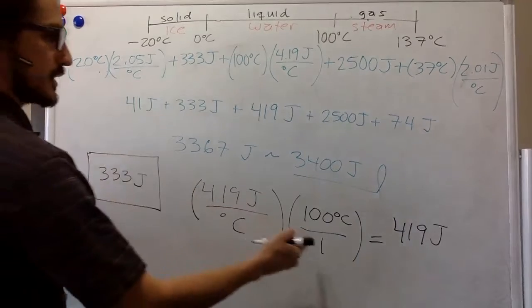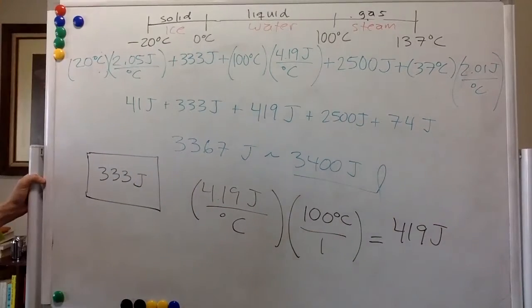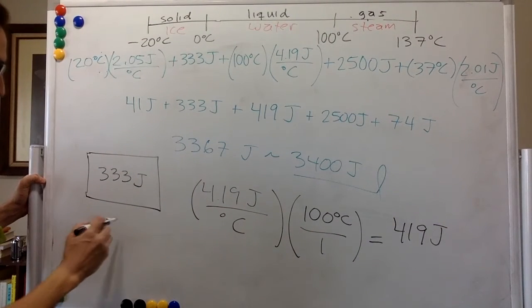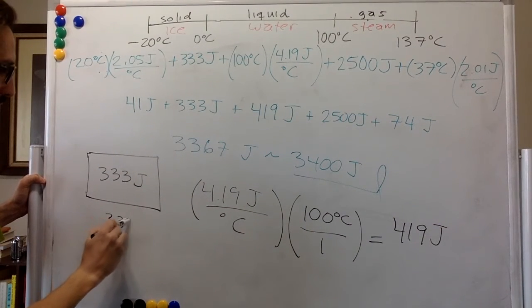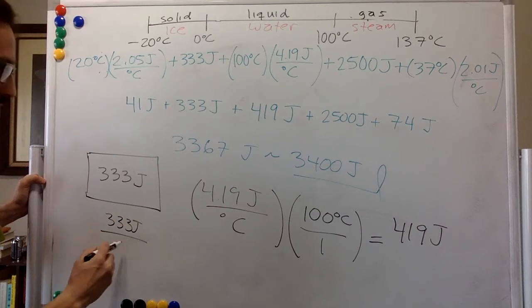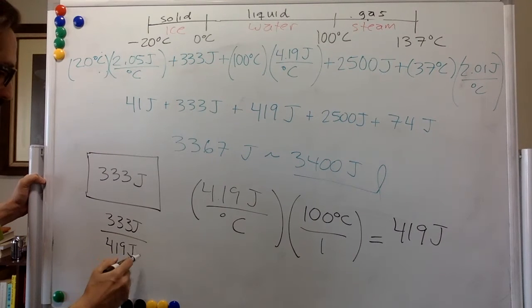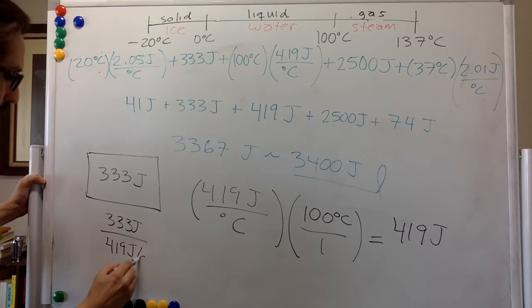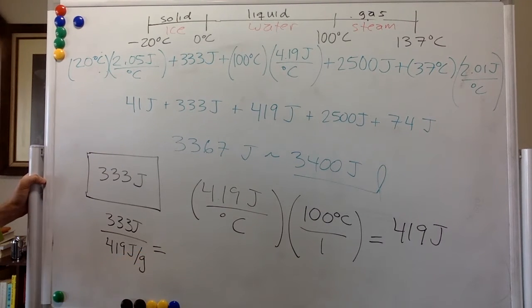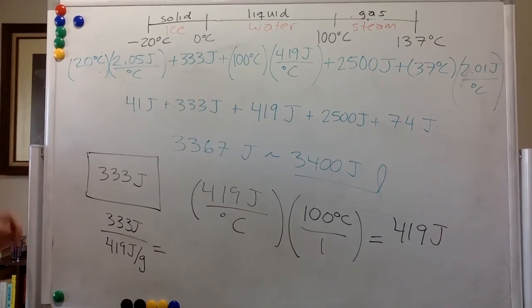So in order to get the right amount of mass, you can do 333 joules divided by 419 joules per gram. And so that will be